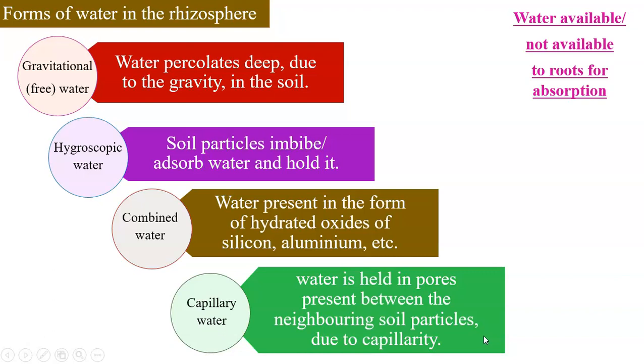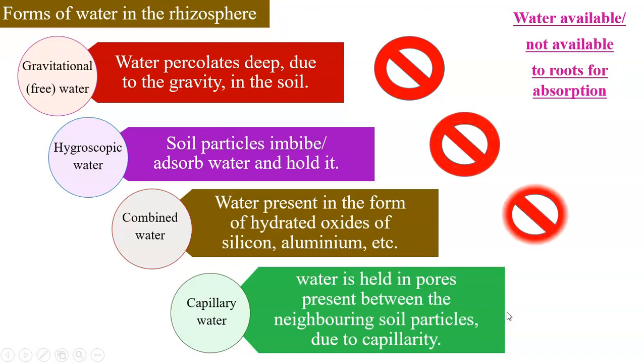Now which water is available and which is not available to roots for absorption. Gravitational water not available. Hygroscopic water not available. Combined water is also not available for absorption. So only water available is capillary water.